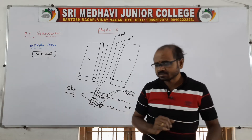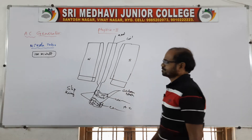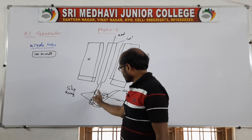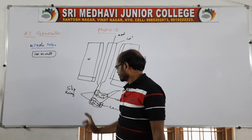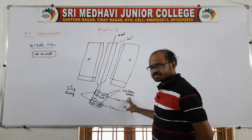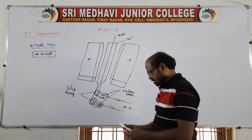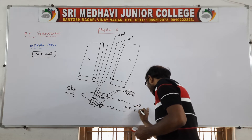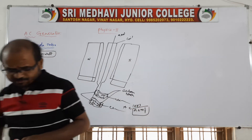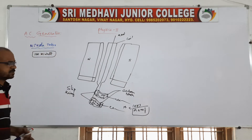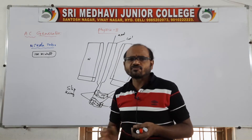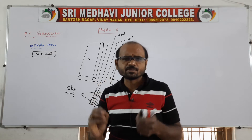In this AC generator, the essential parts are: field magnets, a rectangular coil PQRS connected between the field magnets, one end connected to one slip ring and the other end to another slip ring, and the two slip rings connected to carbon brushes. From the carbon brushes we get alternating current or alternate EMF. The AC generator works on the principle of electromagnetic induction — as long as the flux linked with the coil changes, a current and EMF are induced.